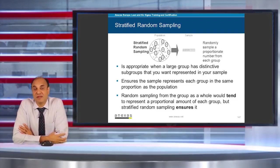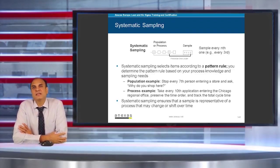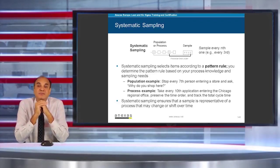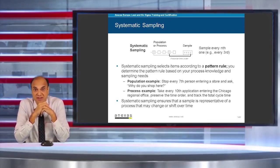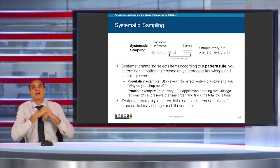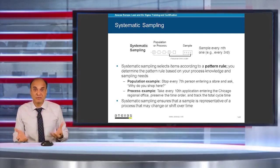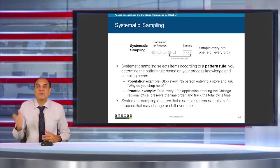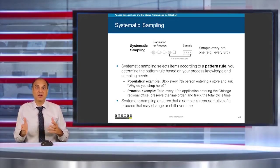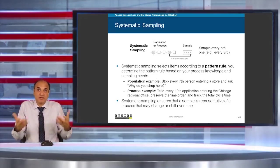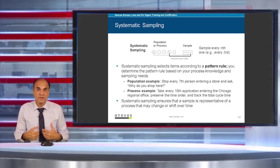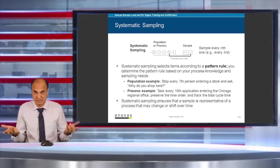Systematic random sampling selects items according to a pattern rule. You determine the pattern rule based on your process knowledge and sampling needs. A population example could be: stop every tenth person entering a store and ask why do you shop here, or ask the tenth patient entering into a hospital about their opinion about the attitude of the hospital staff.